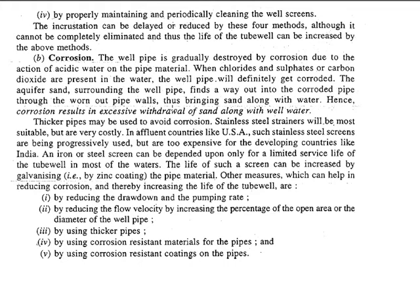To reduce corrosion, we can use galvanized tubewells coated with zinc as the pipe material. Other methods include reducing the drawdown and pumping rate, using thicker pipes, using corrosion-resistant materials for the pipes, or providing proper coating such as zinc coating over the pipes. All such methods can be useful to prevent degradation of the pipe. We conclude these two topics here and will see a different topic next. Thank you.